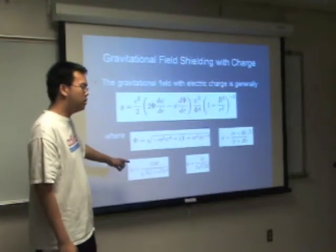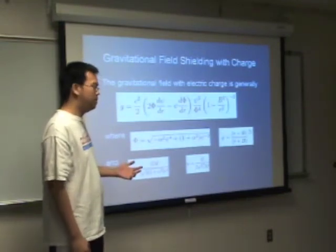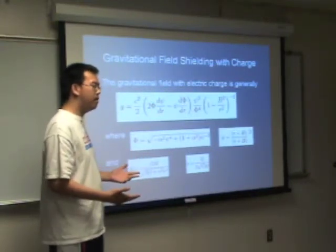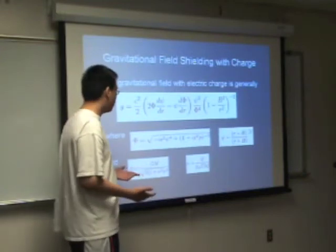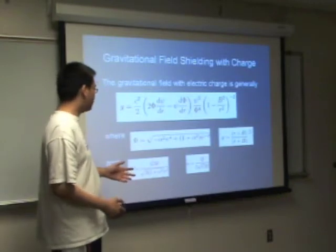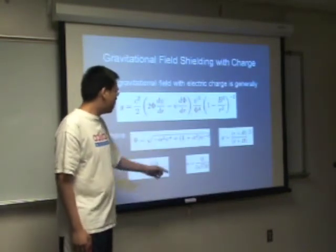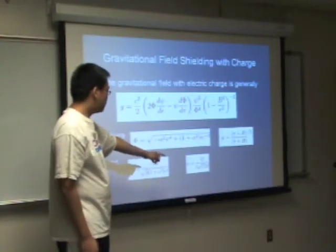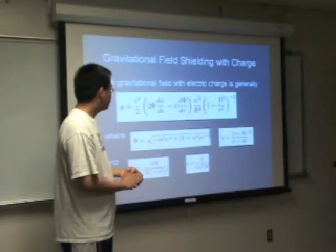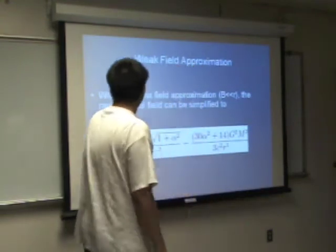And g is the gravitational constant, which is 6.674 times 10 to the negative 11. And m is the 1.5 solar mass, which is 3 times 10 to the 30. And alpha is the charge mass ratio, which is equal to the electric charge over 2 times the square root of the gravitational constant times the mass.